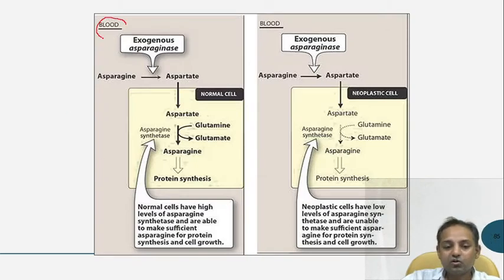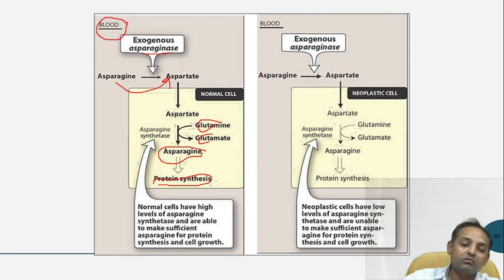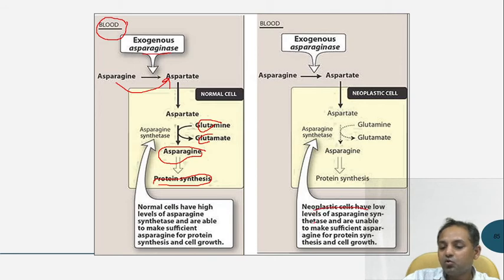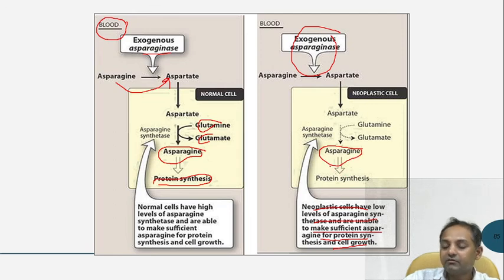In normal cells, asparagine synthetase converts asparagine to aspartate, which is then converted to glutamine and ultimately back to asparagine, allowing protein synthesis to occur. In neoplastic cells, there is a low level of asparagine synthetase, so these cells cannot make sufficient asparagine for protein synthesis and cell growth. By depleting asparagine externally, protein synthesis in neoplastic cells can be stopped.